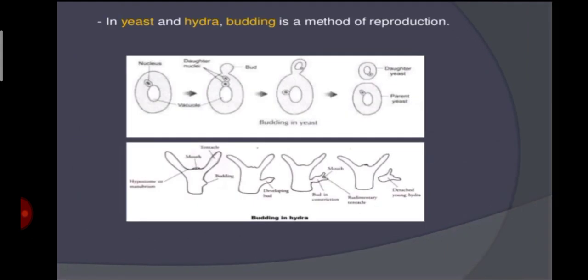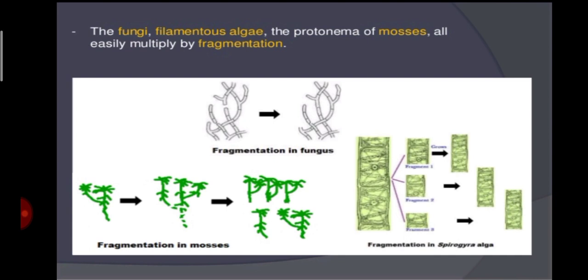In yeast and hydra, budding occurs to produce new organisms, whereas in planaria — flat worms — true regeneration of fragmented body parts occurs, and these parts in turn grow as new organisms. Unicellular organisms like bacteria, algae, and amoeba reproduce by increasing the number of cells, that is through cell division, so growth is synchronized with reproduction.